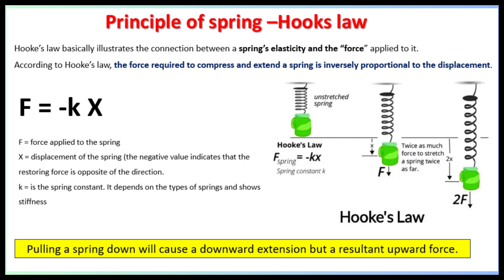Mathematically, F = -kx, where F is the force applied on the spring and x is the displacement — the change in length of the spring from its equilibrium position. The k is a very important factor, generally called the spring constant, or the stiffness or rigidity coefficient. This k represents the spring's resistance to deformation — whenever we apply a load, the spring tries to regain its original position.